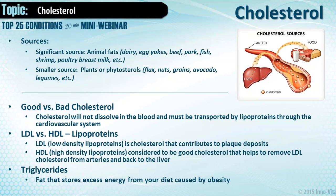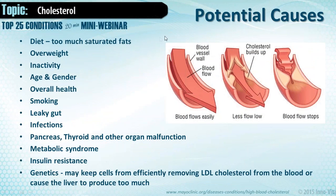Triglycerides are checked alongside HDL and LDL in a lipid screen. Triglycerides are fat that stores excess energy from your diet and are basically a cause of obesity. They can move up and down more quickly than cholesterol. Potential causes of plaquing and high cholesterol include: a high-cholesterol diet, too much saturated fat, being overweight, inactivity — in winter we don't do as much activity — and age and gender, as cholesterol tends to rise as we age.